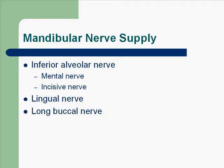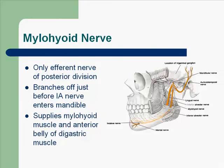To summarize the mandibular nerve supply: the IA nerve branches into the mental nerve, which exits the mental foramen and supplies the skin of the chin, and the incisive nerve, which remains in the mandible. There is also the lingual nerve and the long buccal nerve. The mylohyoid nerve supplies the mylohyoid muscle and the anterior belly of the digastric muscle. It is the only efferent nerve of the posterior division of V3, branching off just before the inferior alveolar nerve enters the mandible.